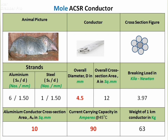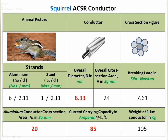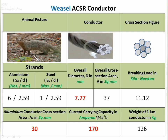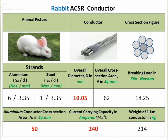Now we will see various types of ACSR conductors. Mole ACSR has six aluminium strands and one steel strand; overall diameter is 4.5 mm, cross-sectional area 12 mm², aluminium area 10 mm², current capacity 90 A, and weight 63 kg/km. Squirrel has area 20 mm² and 85 A current capacity. Weasel and Mongoose type has 30 mm² area and 170 A capacity. Rabbit has 50 mm² area and 240 A current capacity.